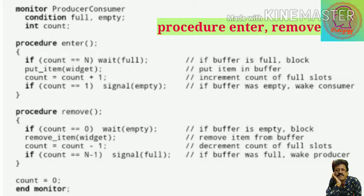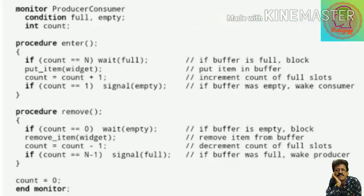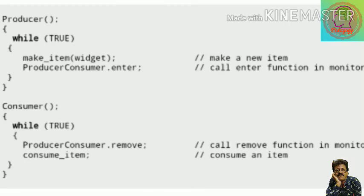Count is a boolean variable. If the buffer is full, count equals n, and we wait. In the enter procedure, we put the item in the buffer and increment count by one. If count equals one, we signal empty to wake the consumer. In the remove procedure, if count equals zero, we wait on empty, meaning the buffer is empty. We remove the item from the buffer and decrement count by one. If count equals n minus one, meaning the buffer was full, we signal to wake the producer.